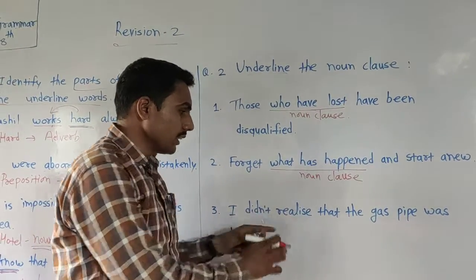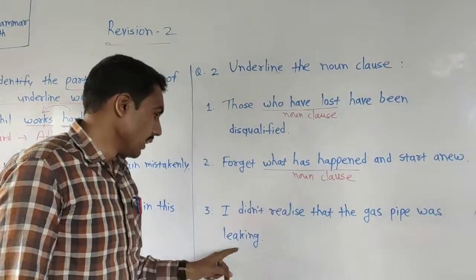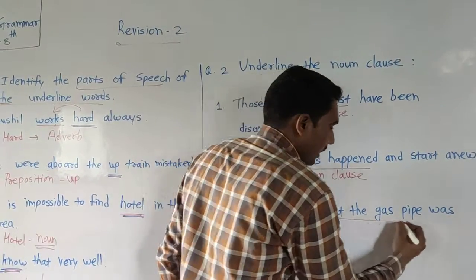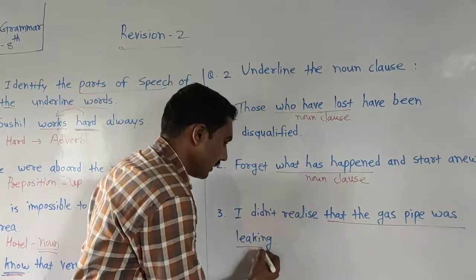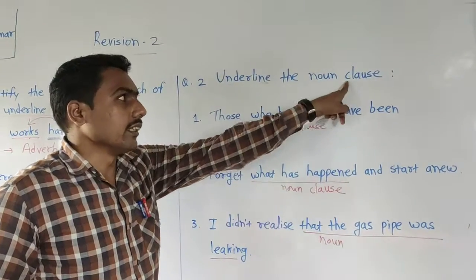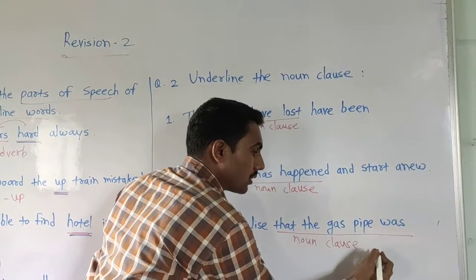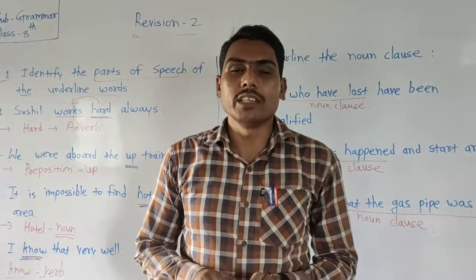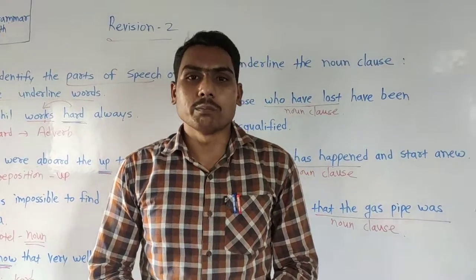The last one: 'I didn't realize that the gas pipe was leaking.' In this example, you can understand easily that 'the gas pipe was leaking' is a noun clause. You want to only underline the noun clause and write noun clause here. In this way we can take a revision of this topic. The remaining revision we will take in the next video. Thank you.